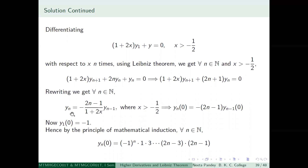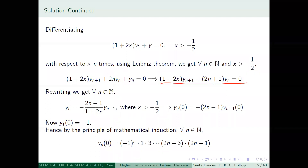So we have written yn+1 and yn terms. The recurrence relation becomes: (1+2x)·yn+1 + (2n+1)·yn = 0. Rearranging, we get the recurrence: yn = minus (2n−1)/(1+2x) times yn−1. This is the recurrence relation we derived.